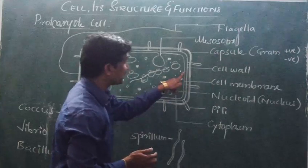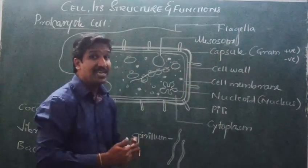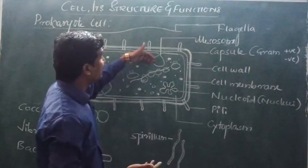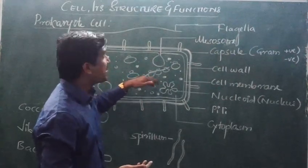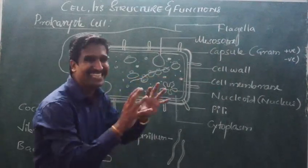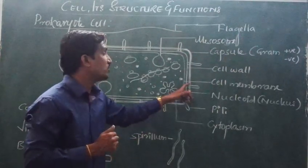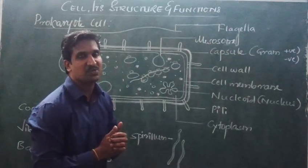This plasma membrane helps to take material in and send material out from the bacteria. It sends out what is not essential and takes in from outside. That is why it is considered a selective semipermeable membrane. That is the function of this cell membrane, also called plasma membrane.